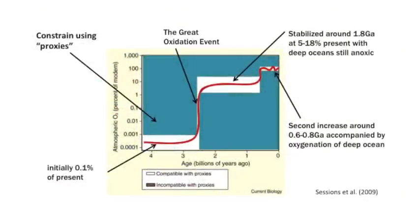This graph shows how oxygen has changed over time. We can use things called proxies — geochemical indicators in the rock record — that tell us something about the concentrations of oxygen. Minerals, for example, behave in particular ways when subjected to certain atmospheric concentrations of oxygen, and that behavior can tell us what the levels of oxygen might have been. It's important to recognize three essential major periods of oxygen throughout Earth history.